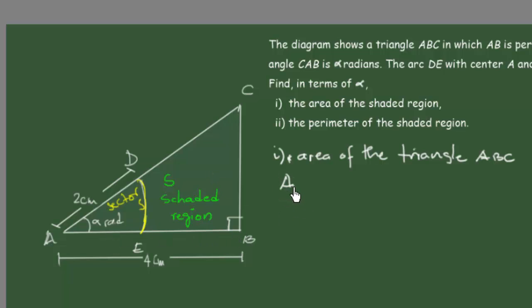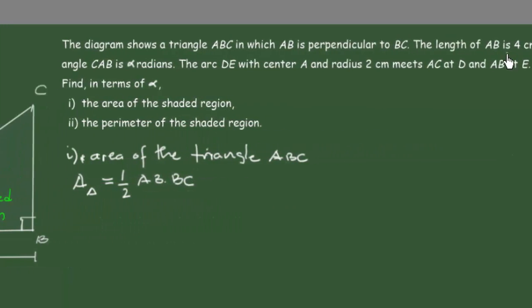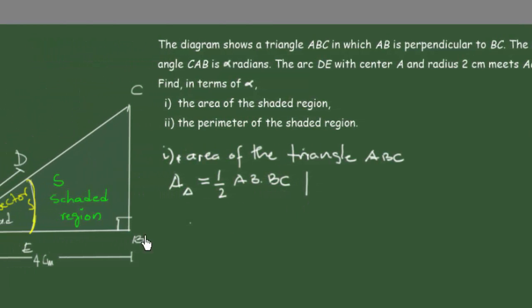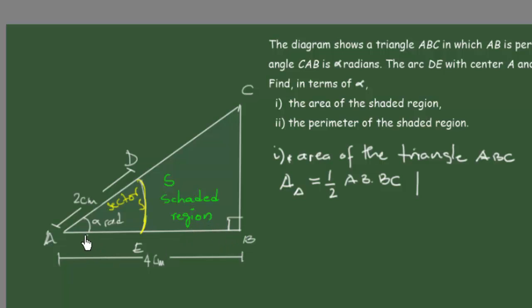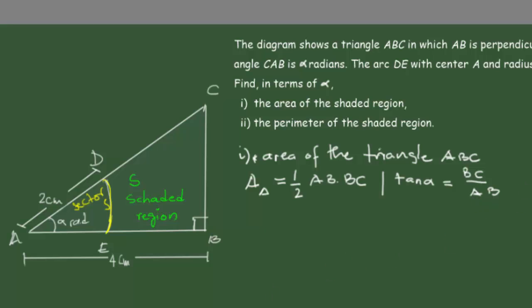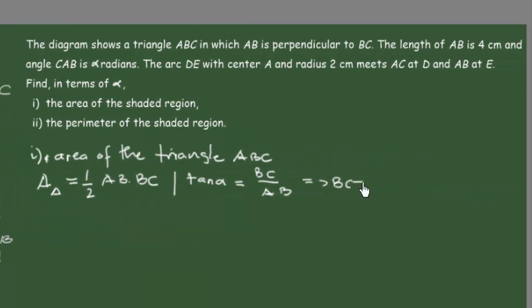The area of the right-angled triangle ABC equals one-half times AB times BC. We already have AB as 4 centimeters, but we need BC. Using trigonometry, tan(α) equals the opposite side over the adjacent side, so tan(α) = BC over AB. Therefore BC equals AB times tan(α), which gives us BC = 4tan(α).